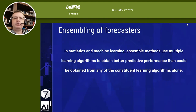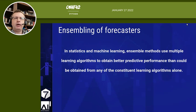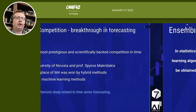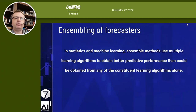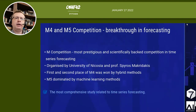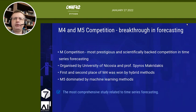Starting from the beginning: what is ensembling? Ensembling simply uses outcomes from multiple forecasters to achieve better accuracy, better robustness and stability of the results. It's nothing new — ensembling has been used for a very long time, mostly in simple forms, but there have also been more advanced algorithms of ensembling present.